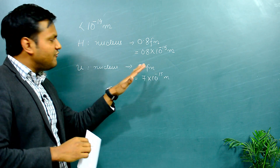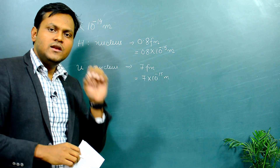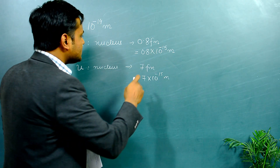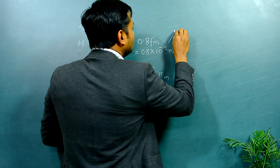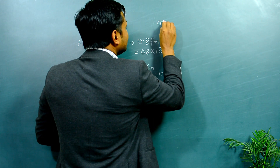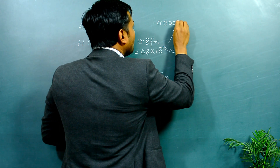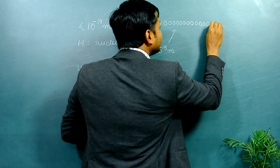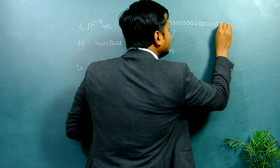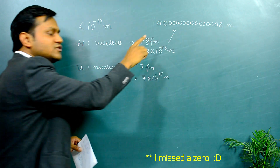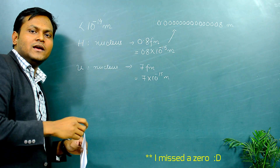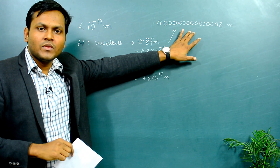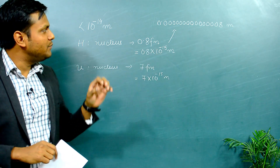A femtometer is 10 to the power minus 15 meters - that is, 0.000000000000001 meters. That is how small the nucleus of a hydrogen atom is. That is quite small, and to appreciate just how tiny the nucleus is, let's do a fun calculation.